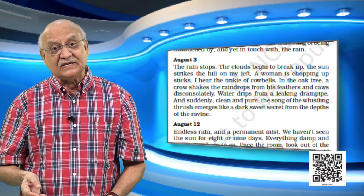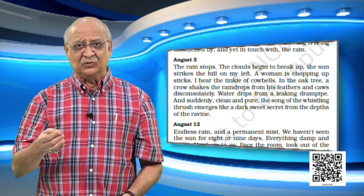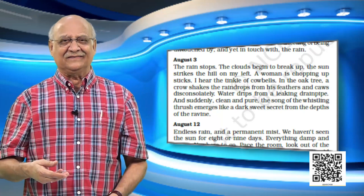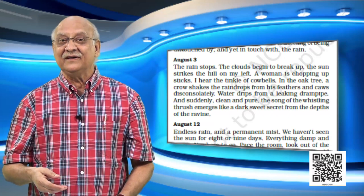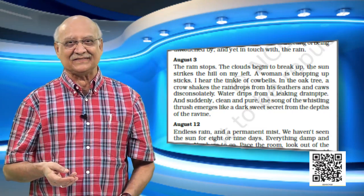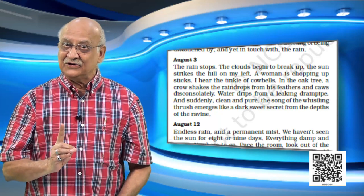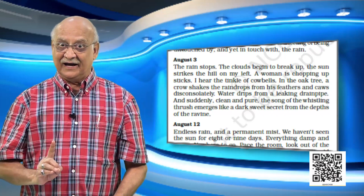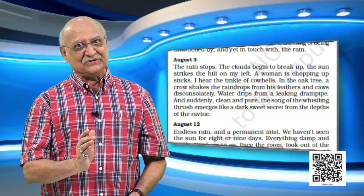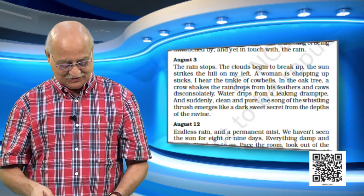He also says there is water dripping down from the drainage — all the collected water is now coming down the drain. And all of a sudden on August 3rd, Ruskin Bond hears birds singing — a thrush sings. How many noises did you hear? You heard the woman chopping, the cow bells, the rain, the crow shaking off water, the drainage, and then the thrush. You are going to make a list of all the noises. First you saw the flowers, then the reptiles, then the leopard, and now you hear the birds and all the sounds.